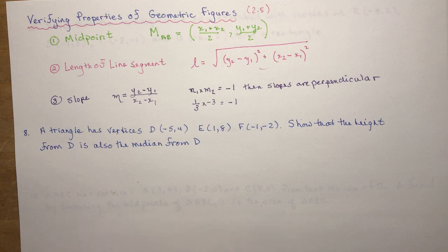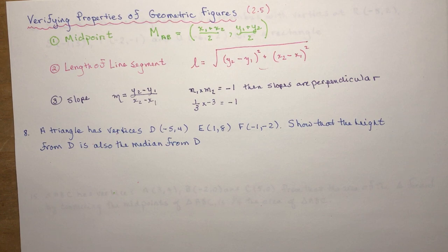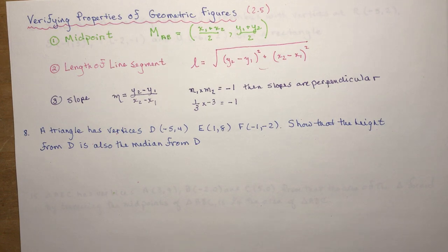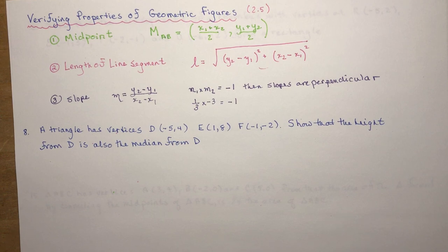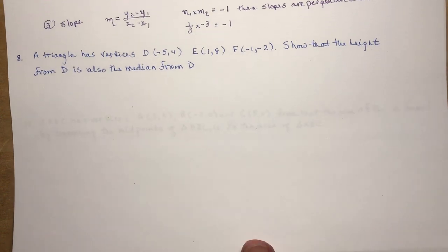Those are our three main formulas we're going to be working with. Now I'm going to pull up three word problems from your textbook: numbers 8, 10, and 15. The first one says a triangle has vertices at (−5, 4), (1, 8), and (−1, −2). Show that the height from D is also the median from D. When I first read this I thought I wasn't sure what they were asking, but here we go.